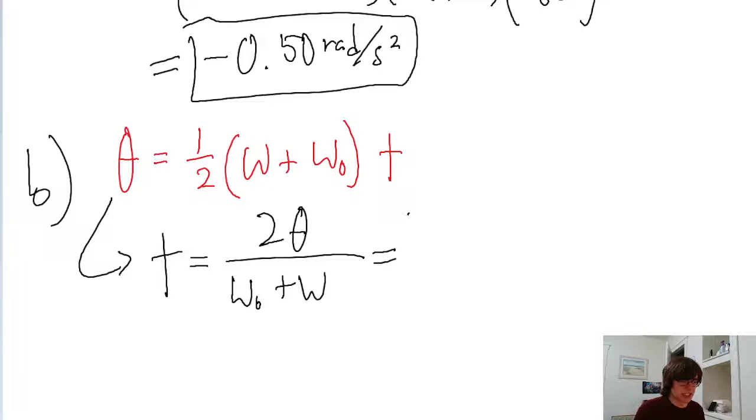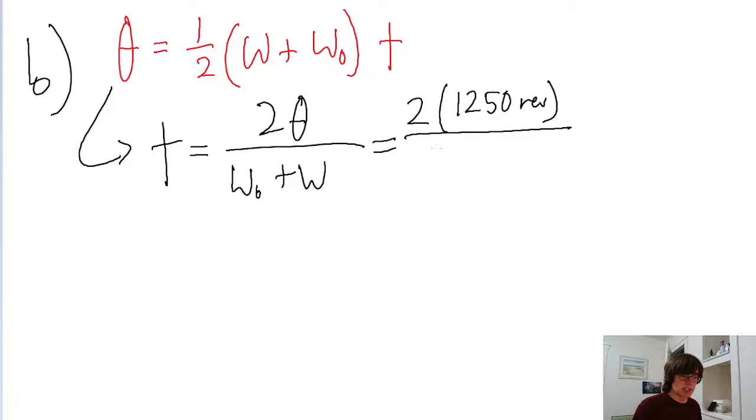So the numerator is 2 times 1250 revolutions divided by the initial angular speed of 850 revolutions per minute.